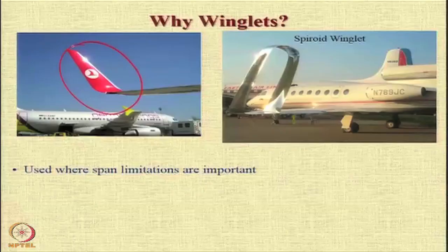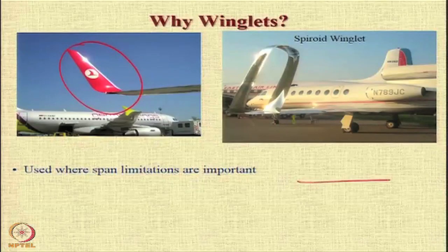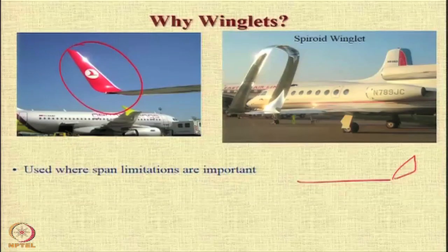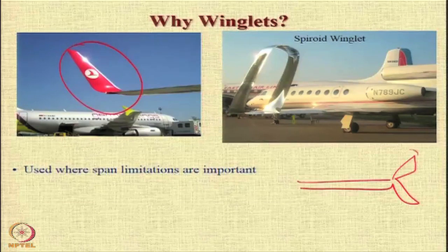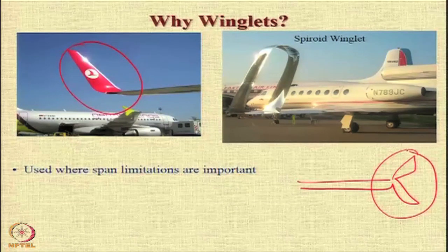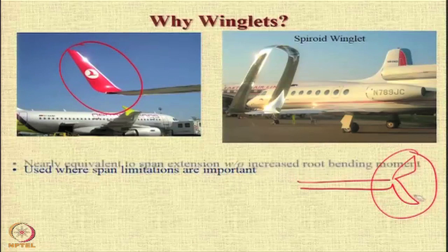There are various types of winglets. There could be simple upward bend type winglets, or there could be more complicated ones such as a winglet which has something on the top and something on the bottom. You could have winglets of this particular type also.